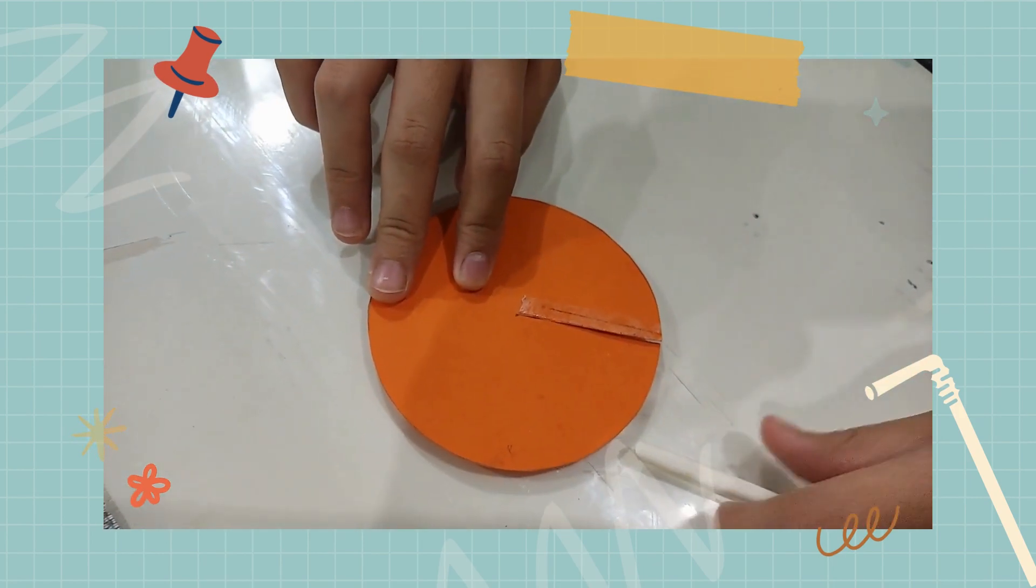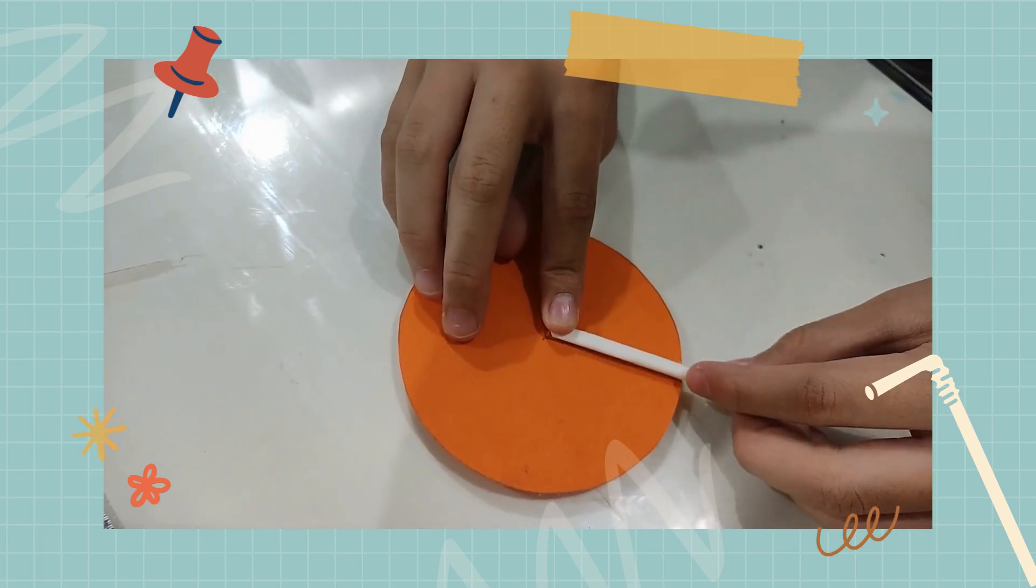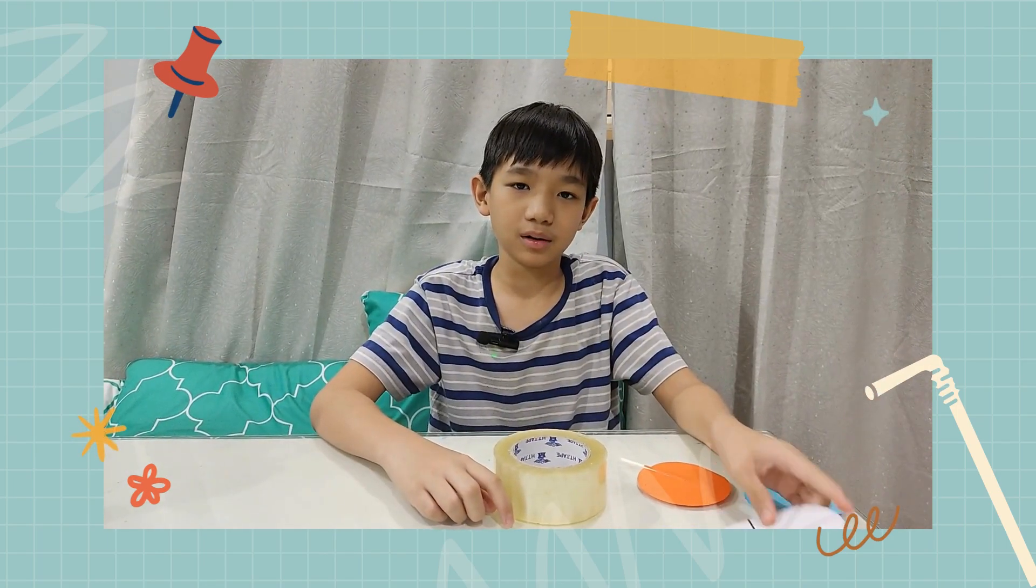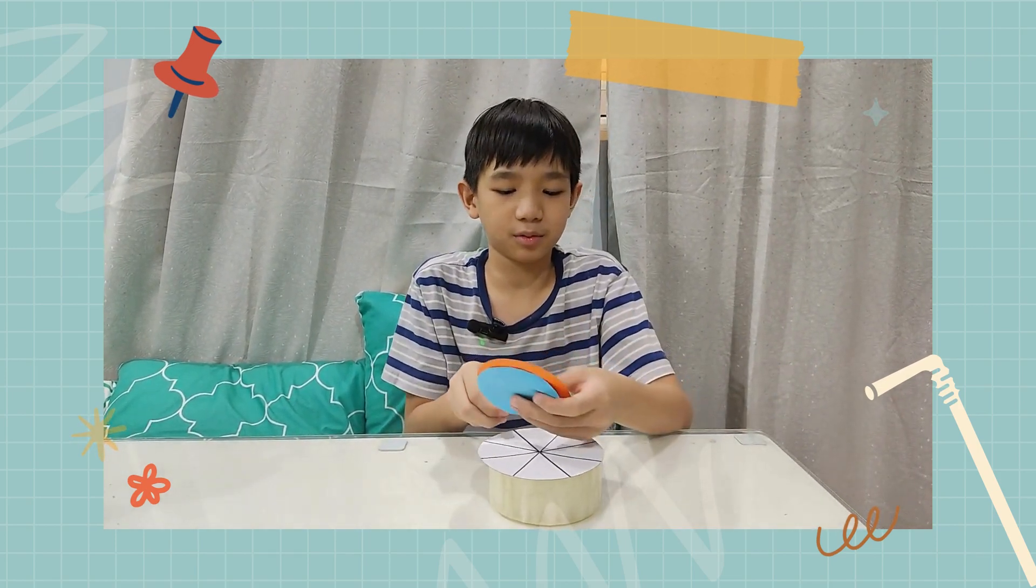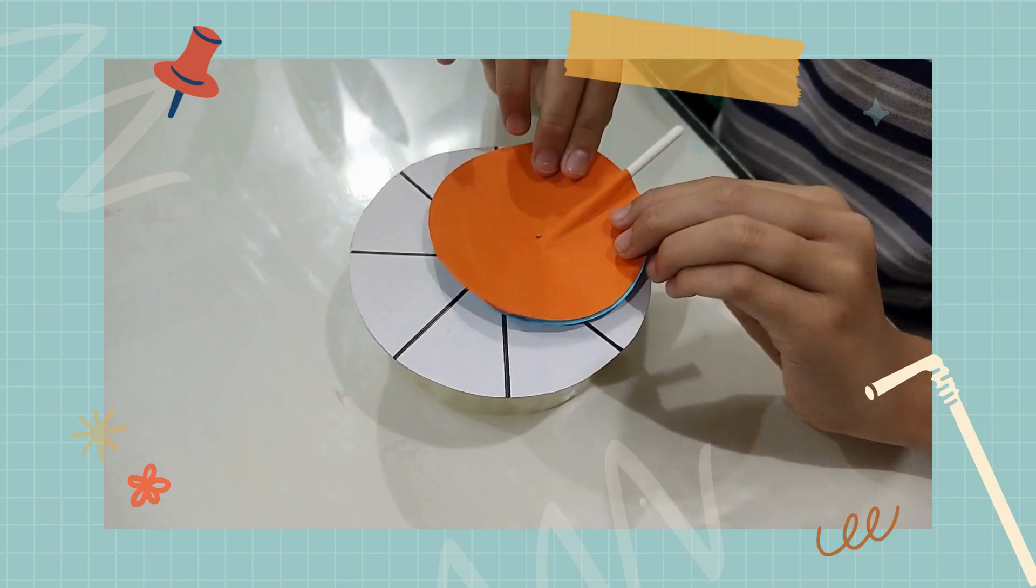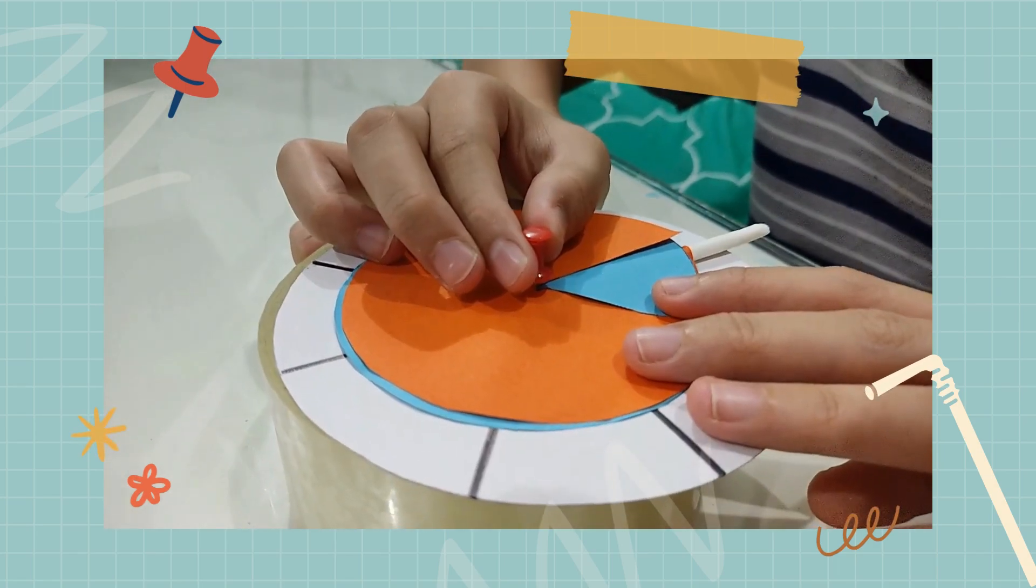Attach the paper straw onto the circle using double-sided tape. Time to assemble. Put the smaller circles on top of the bigger one and overlap them like this. Secure it with a pin.